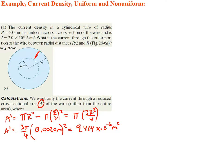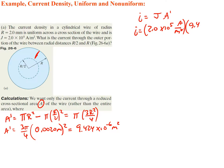Now we find the current using I = J × A′. Our current density is 2.0 × 10⁵ amps per meter squared, multiplied by the area we just found, 9.424 × 10⁻⁶ m². That gives a current of 1.9 amps.